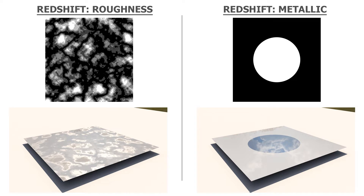In this video I'm going to explain the difference between a roughness map and a metallic map, and what each of the colors within each texture — the black, the white, and everything in between — mean when it comes to the roughness and the metallic texture. A lot of beginners don't understand what the different ranges of white to black mean when they look at a texture.